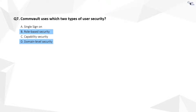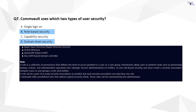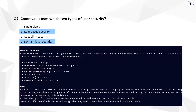The correct answer is B and D. A role is a collection of permissions that defines the level of access granted to a user or a user group. Permissions allow users to perform tasks such as performing backup, restore, and administrative operations on entities. To use role-based security, you must create a security association between users or user groups, a role, and entities. A domain controller is a server that manages network security and user credentials.